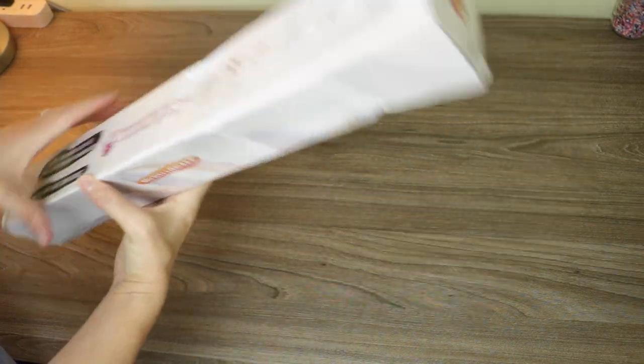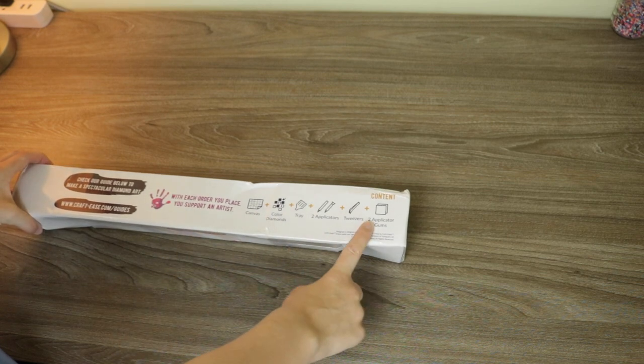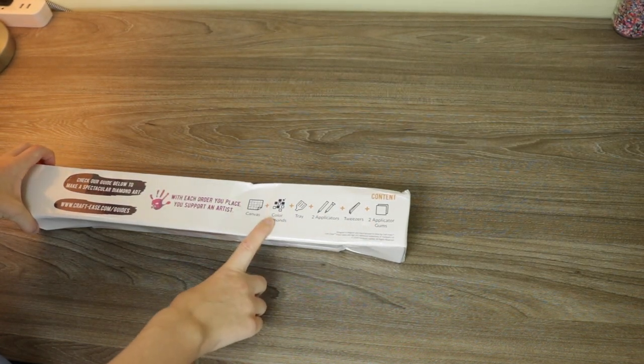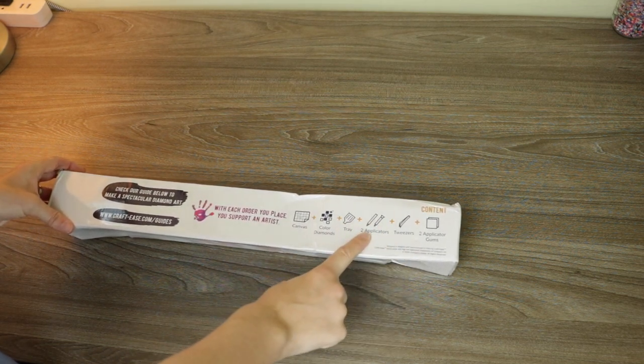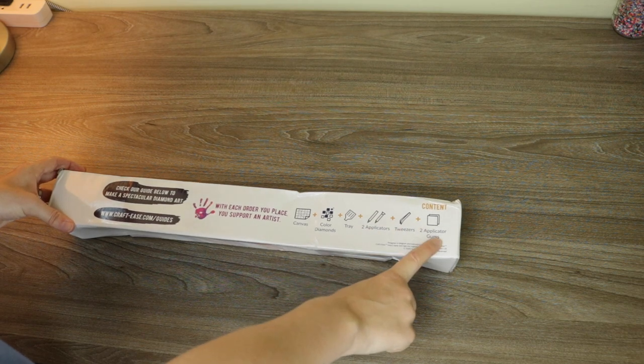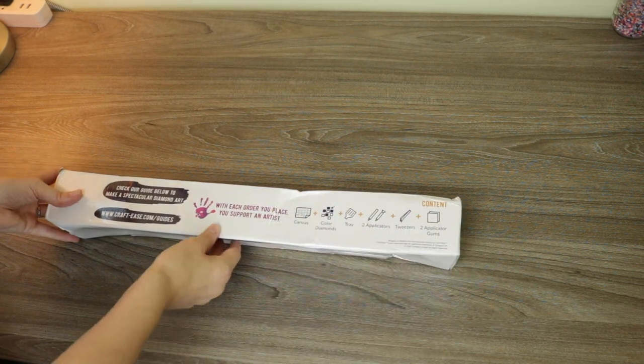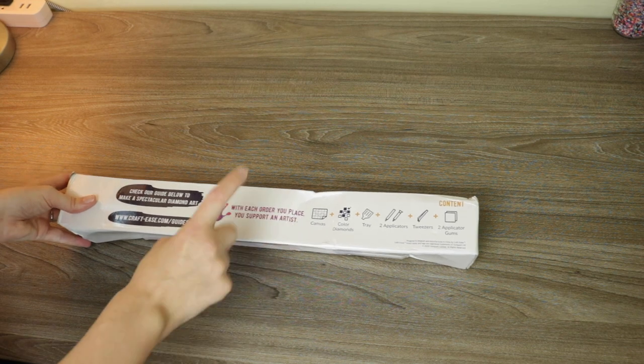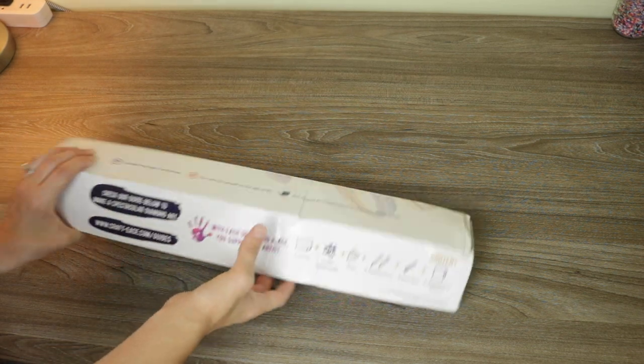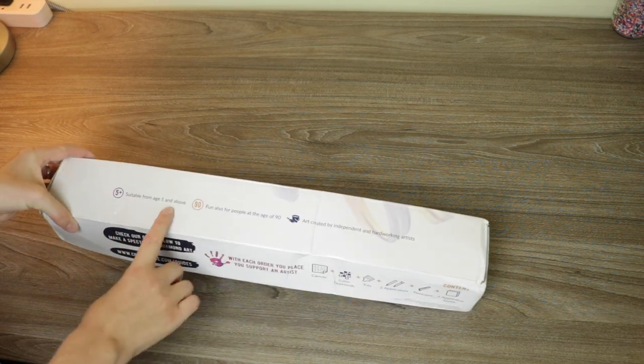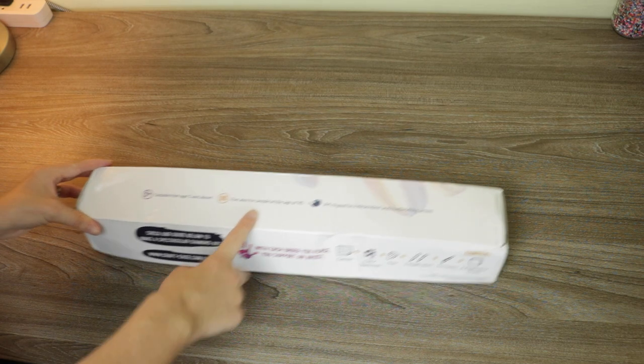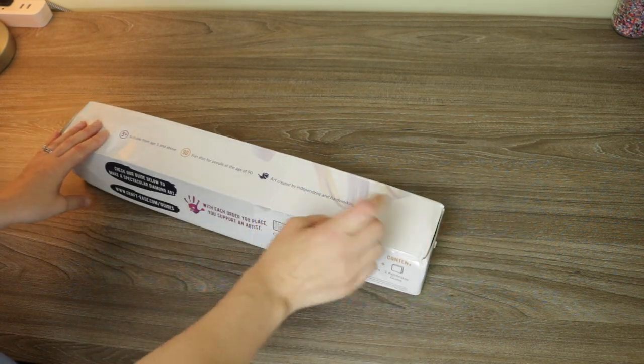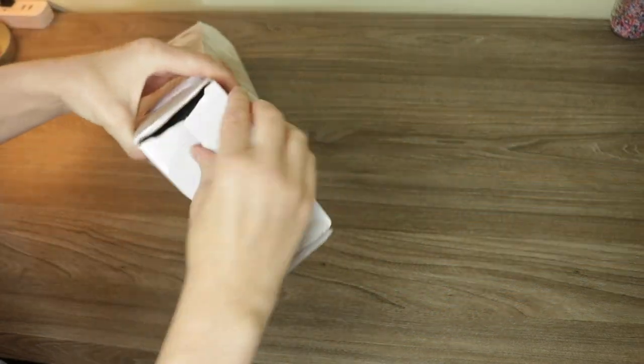Now I do believe that their kits, oh, this is what's included in everything. So you get the canvas, you get the diamonds. I do know that I think they only do round kits. A tray, two applicators, tweezers and applicator gums, aka the wax. With each order you place, you support an artist. This is basically what I want to support on my channel. So suitable for ages five and above. Fun also for people at the age of 90. Good thing I'm in this range. Art created by independent and hardworking artists. So let's get into it, and let's see what it looks like. I am very excited. I did get to choose the kit, so I was very excited over that.